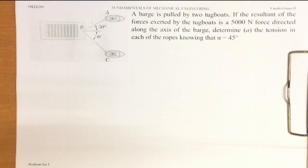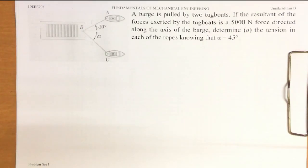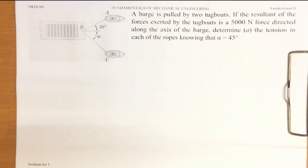A barge is being pulled by two tugboats. The resultant of the force exerted by the tugboats is 5000 Newton directed along the axis of the barge. Determine the tension in each rope knowing that alpha is 45 degrees.